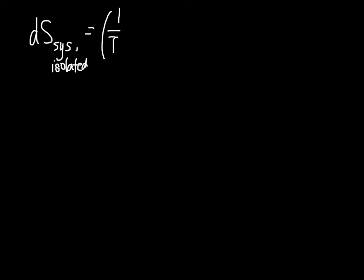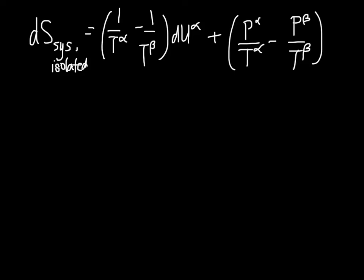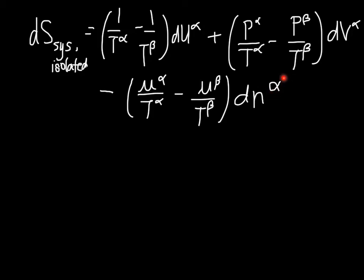1 over T alpha minus 1 over T beta times dU alpha, plus P alpha over T alpha minus P beta over T beta times dV alpha, and minus mu alpha over T alpha minus mu beta over T beta dn alpha. Now, these alpha and betas, keep in mind, these are not exponents, these are just superscripts indicating which part of our system we are in.